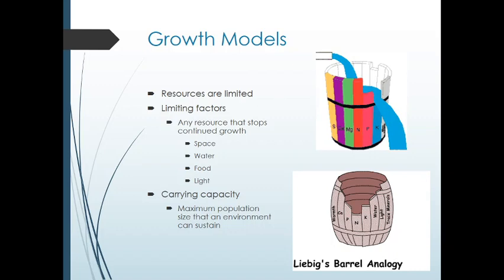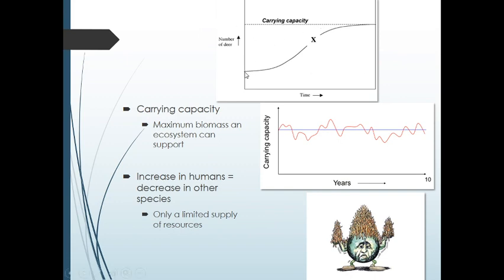The water level in this barrel is the maximum population size that an environment can sustain — this is called the carrying capacity. When we have an increase in population, it looks exponential for a while, but then it flattens out into logistic growth. Species do stop growing; their population sizes stop growing due to these limiting factors. That carrying capacity is the maximum biomass an ecosystem can support. It won't just approach and stay at the carrying capacity — it'll bounce around, with more babies born one year, those babies dying off, bouncing around somewhat randomly.